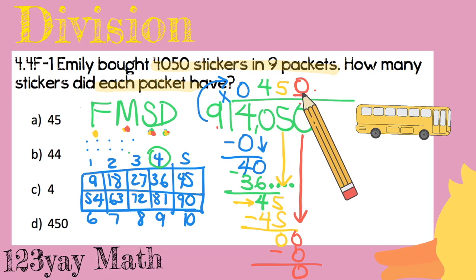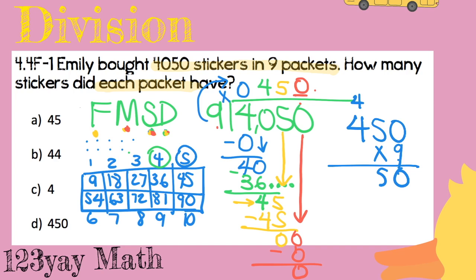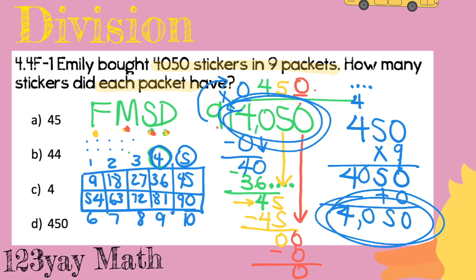Now let's check our answer. Multiply 9 times 450 and add our remainder — but the remainder is 0. So: 9 times 0 is 0, 9 times 5 is 45 — carry the 4, 9 times 4 is 36, plus 4 equals 40. That gives us 4,050. Is it the same? Yes! It's the same as our original number, so we know our answer is correct.